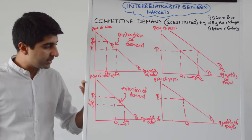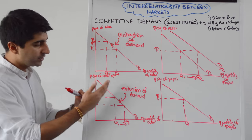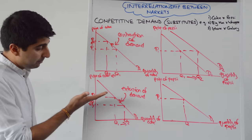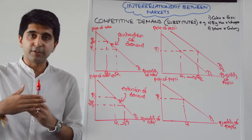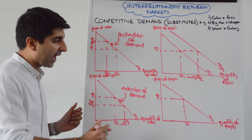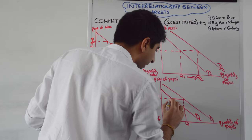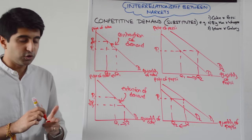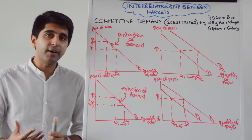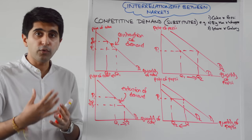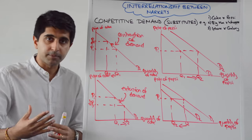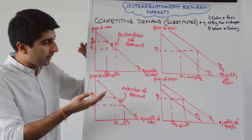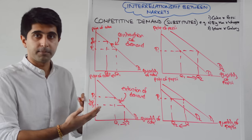Whereas when the price of Coke decreases, we see an extension of demand for Coke — we move down the demand curve and see an increase in the quantity demanded of Coke. If Coke is cheaper, demand for the substitute, i.e. Pepsi, will shift to the left from D1 to D2 at the same price, which reduces the demand for Pepsi from Q1 to Q2. So as the price of the substitute changes, we move along the demand curve for that good, but demand for another substitute will shift either to the right if the substitute's price goes up, or to the left if it goes down.